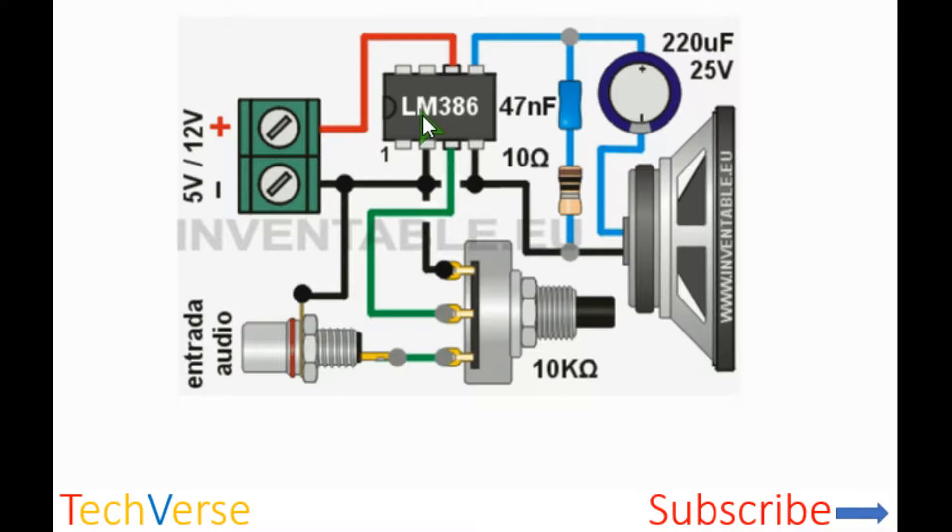The heart of the project is the LM386 operational amplifier. For the project you need a power supply from 5 to 12 volts and at least 2 amperes of current.